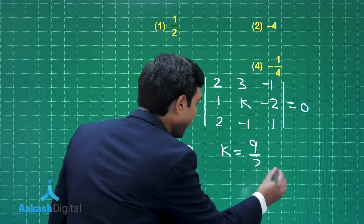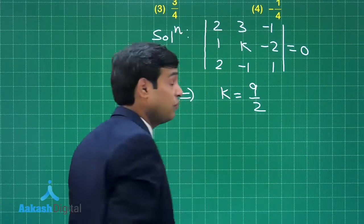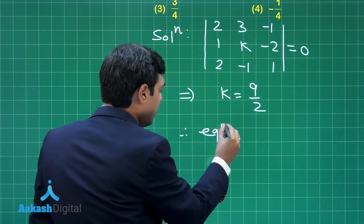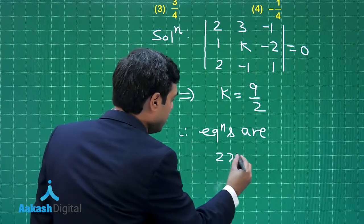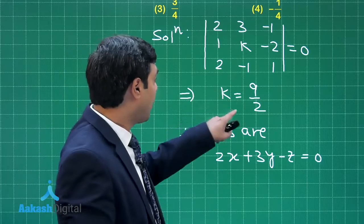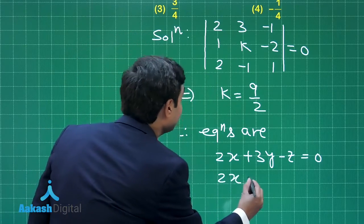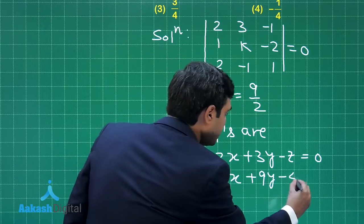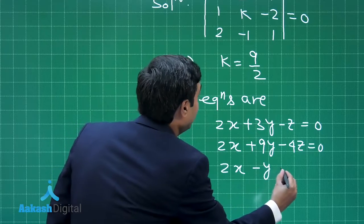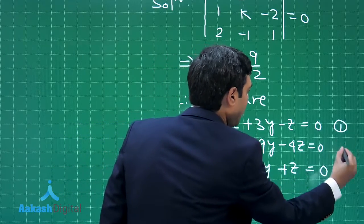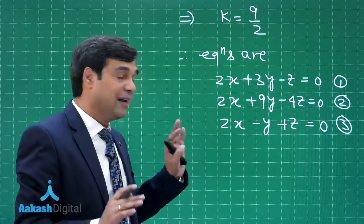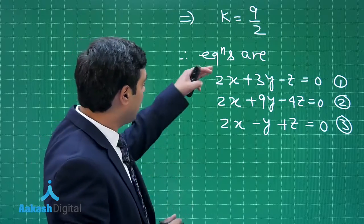Solving the determinant, we get k = 9/2. Now we put the value of k back to rewrite the equations. The first equation is 2x + 3y − z = 0. The second equation with k = 9/2 becomes 2x + 9y − 4z = 0. The third equation is 2x − y + z = 0. Label these equations 1, 2, and 3.